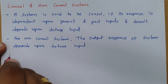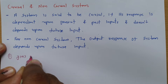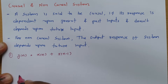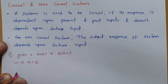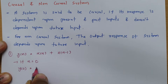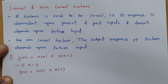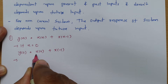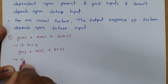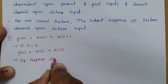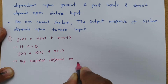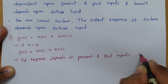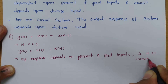In the first problem, y(n) = x(n) + x(n-1). If we place n = 0, we get y(0) = x(0) + x(-1). Here, the output response depends on the present input x(0) and past input x(-1). So the output depends on present and past inputs, making this a causal system.